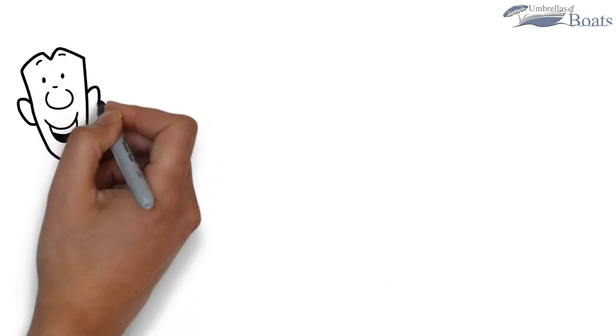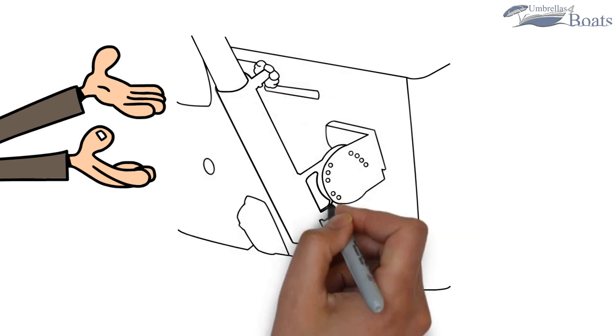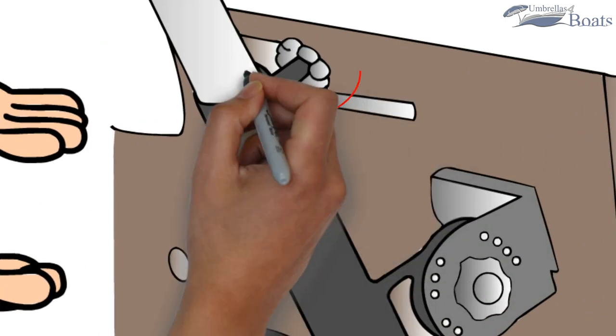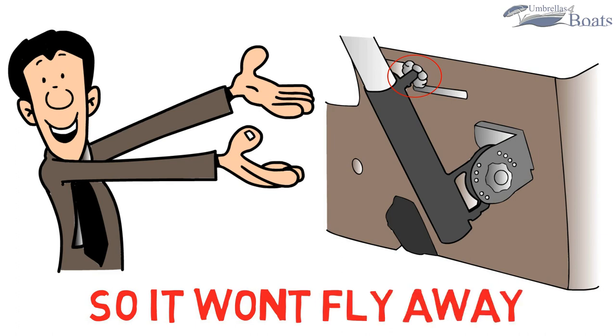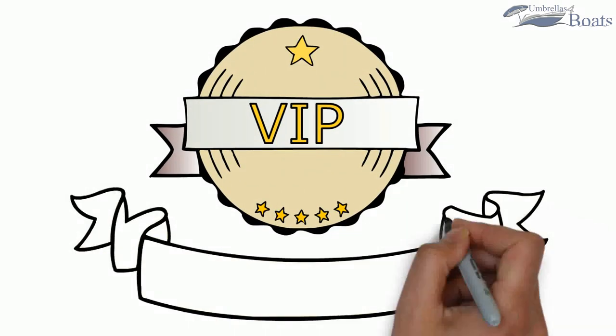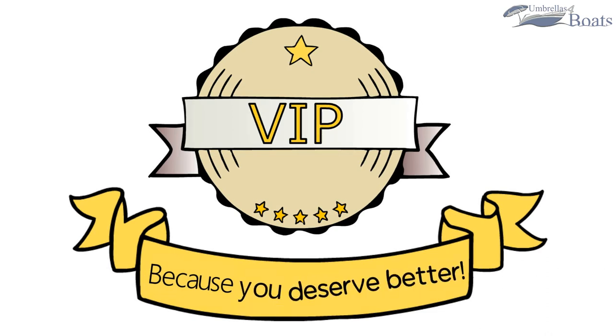Step 4. Set the umbrella. Assemble the umbrella pole. Insert the pole inside the bracket and use the screw on the tube to secure the umbrella so it won't fly away. Now you can be the VIP at the sandbar because you deserve better. Thanks for watching.